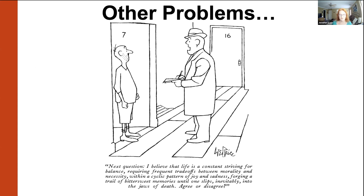One thing that happens with both self-report and informant report data is that questions can be worded in such a way that they're really confusing or double-barreled. Double-barreled is when you're actually agreeing to two different things in the same question where you may agree with one and not the other. So there are issues with the way questions are constructed, and you need to consider that the way questions are worded for both informant and self-report can be confusing and misleading.